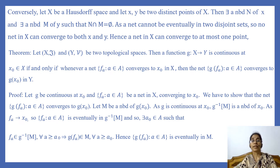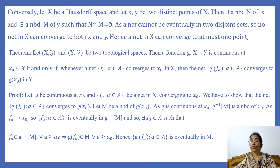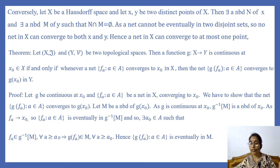Let us prove this theorem. Let G be continuous at x₀, and let F_A (A ∈ A) be a net in X converging to x₀. We have to show that the net G(F_A) (A ∈ A) converges to G(x₀). Let M be a neighborhood of G(x₀), because we want to show that this net is eventually in each neighborhood of G(x₀). We take a neighborhood M of G(x₀).